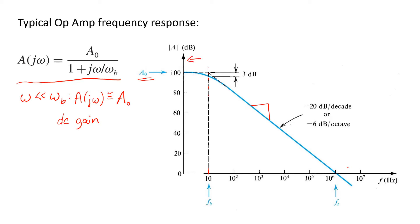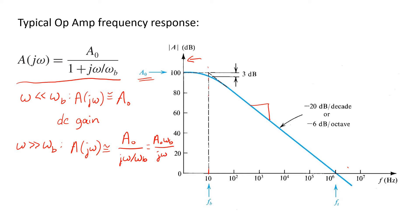As we look at frequencies on this plot, which is plotted on a semi-log scale versus frequency, at frequencies far below the corner frequency the plot asymptotically approaches the DC gain value A0. At high frequencies — that is, ω well above the corner frequency ωB — the expression is closely approximated by ignoring the unity term in the denominator, leaving A0 over jω/ωB, or A0·ωB over jω. So in that region, the magnitude of the gain is inversely proportional to ω, which leads to the uniform roll-off of 20 dB per decade.